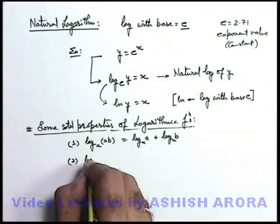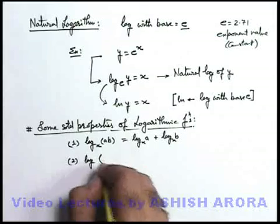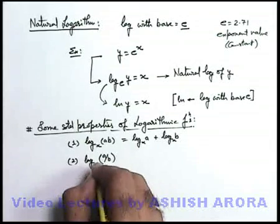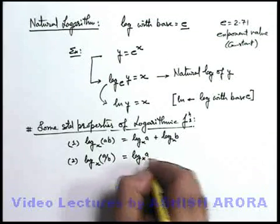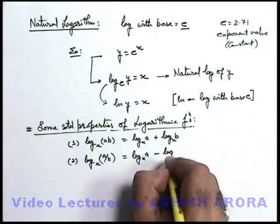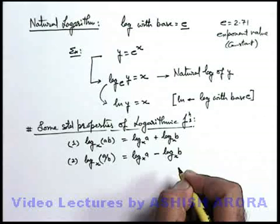Another property is, say you're given with log having argument a by b in quotient form with the same base x. It can be written as log a to the base x minus log b to the same base x.